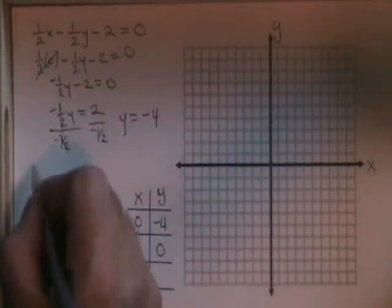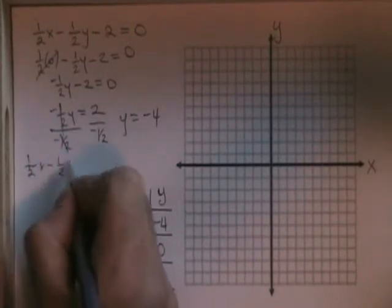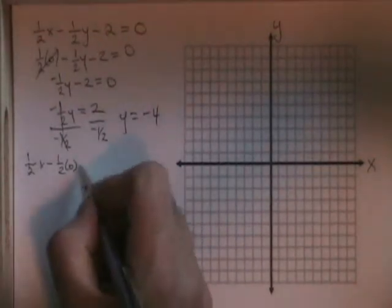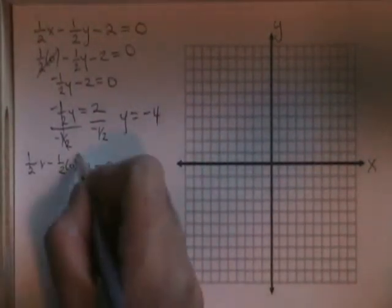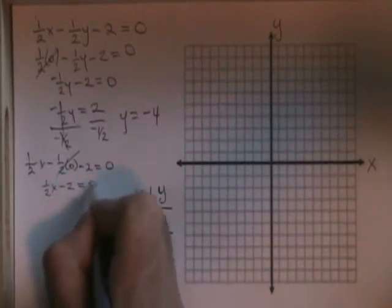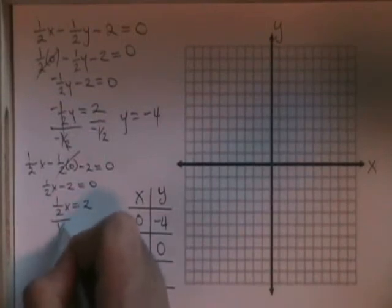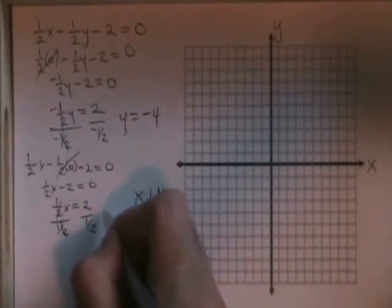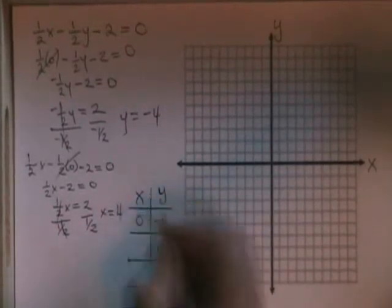If y equals zero, I have one-half x minus one-half times zero minus two equals zero. This cancels. I have one-half x minus two equals zero. One-half x equals two. Divide both sides by one-half. These cancel, and x is equal to two divided by one-half, which is positive four.